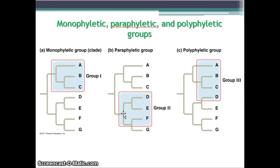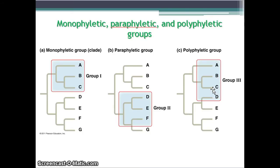Paraphyletic doesn't include every single descendant. So it has the grandparents and parents, but it might not include you or your brother or sister — just one of you and some of your offspring. It's missing something. Polyphyletic refers to just individual organisms — for example, just your offspring, your sons or daughters, or your brother's sons or daughters. Very small groupings.